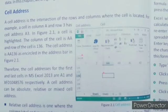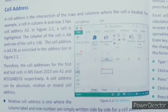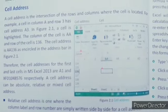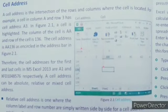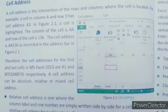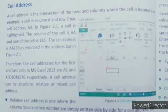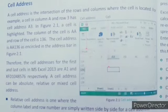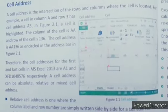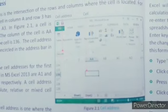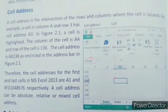A cell is located, for example, a cell in column A and row 3 has a cell address A3. In Figure 2.1, a cell is highlighted - the column of the cell is A and the row is 136. The cell address is AA136, as shown in the circle in the address bar in the figure.